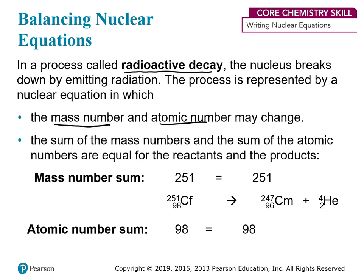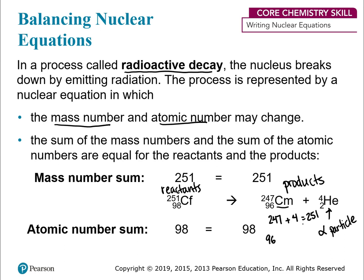On the reactant side and on the product side, the mass number totals should be equal, just like the atomic numbers. Here, with a mass number of 251 and atomic number of 98 on the reactant side, this is alpha decay. Adding 247 plus 4 gives 251 for the mass numbers, and adding the atomic numbers of the new element plus 2 gives 98. It should balance on both sides.